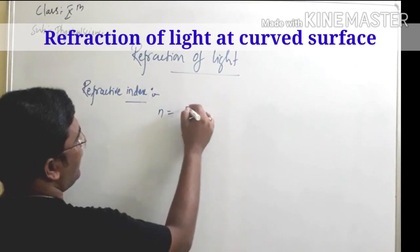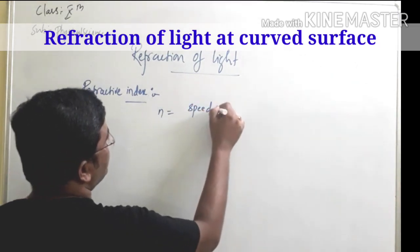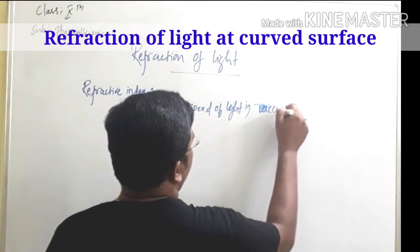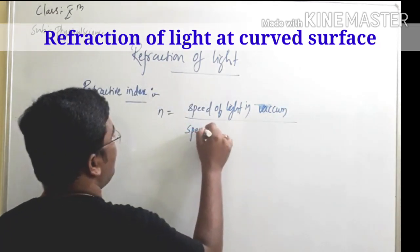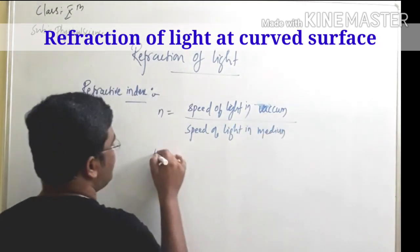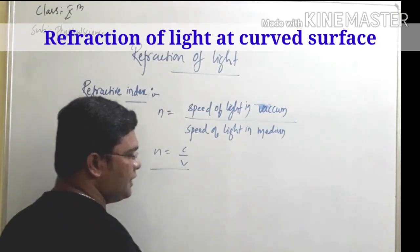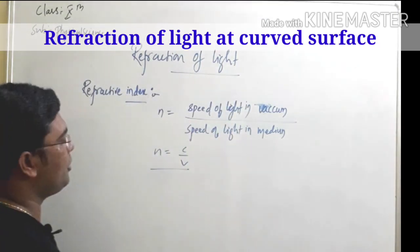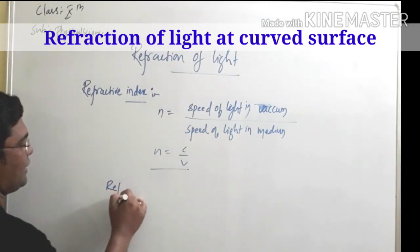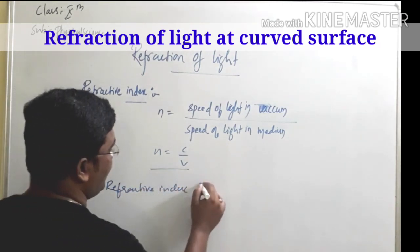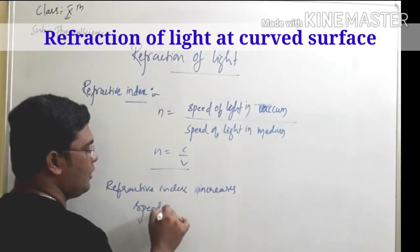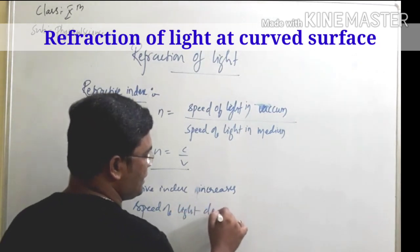Refractive index N is defined as the ratio of the speed of light in vacuum to the speed of light in the medium. It is given as N = C/V. It is a unitless quantity. Remember: if the refractive index increases, the speed of light decreases.